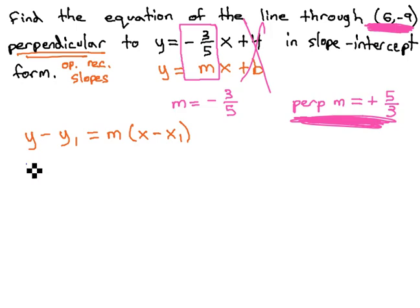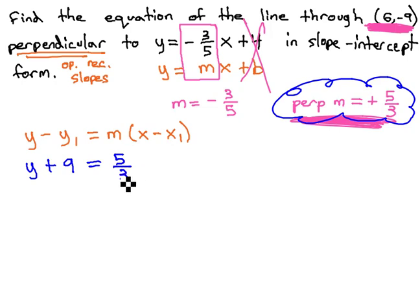We're placing the values with what we know. y - y₁, which is -9. Subtracting -9 is the same as adding positive 9, equals our slope. Make sure we use the correct slope, the opposite reciprocal one, positive 5/3, times x - x₁, which is 6.